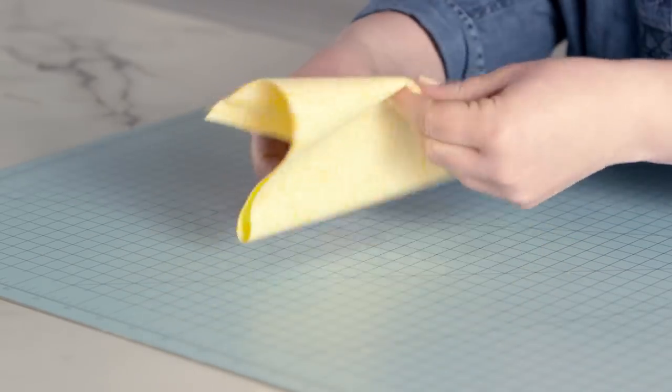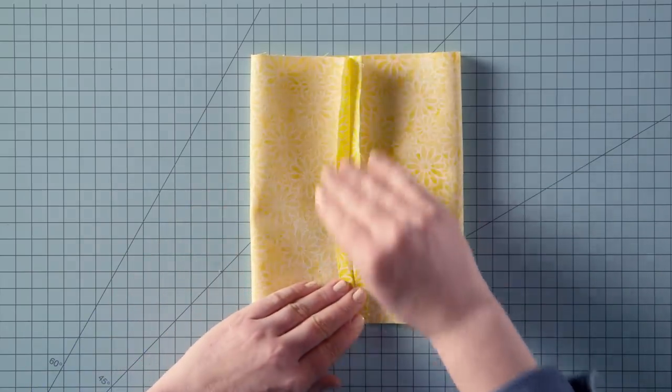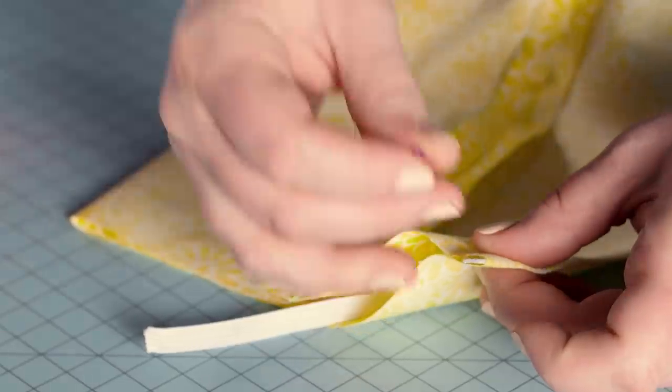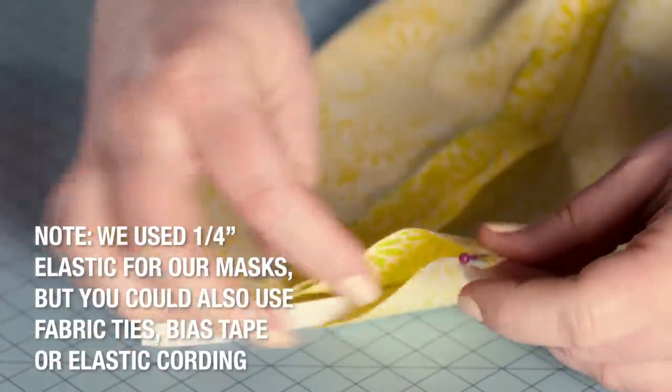When you're done, bring the seam to the center. Now cut 2 7 inch pieces of elastic and pin them between the layers of fabric, one end at each corner on each side of the mask.